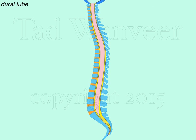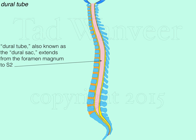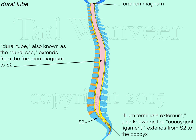The dural tube is found within the spinal canal. The dural tube is also known as the dural sac. It extends from the foramen magnum to the level of sacral segment S2. At S2, the dural sac ends, and the three meningeal layers that form the dural tube extend downward to attach to the coccyx. This extension is called the filum terminale externum, also known as the coccygeal ligament.